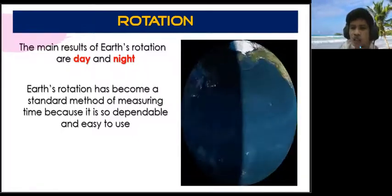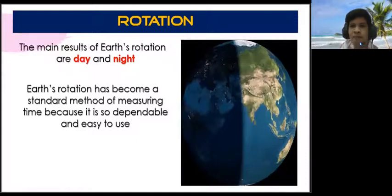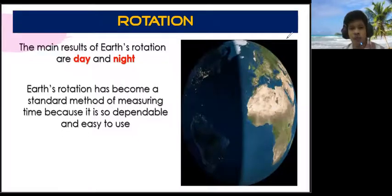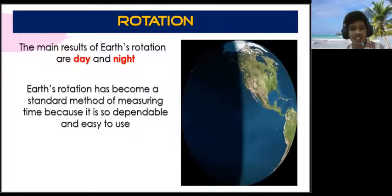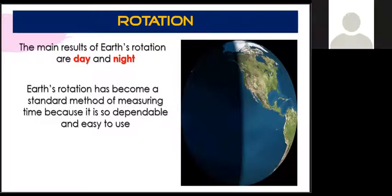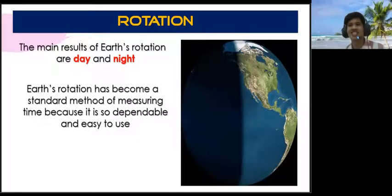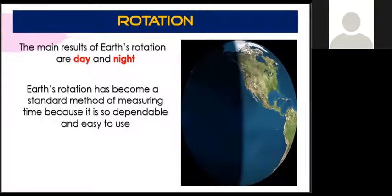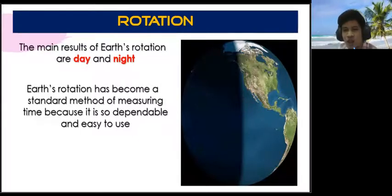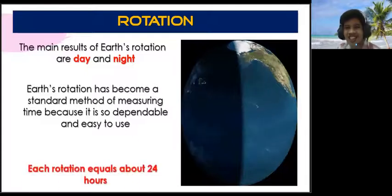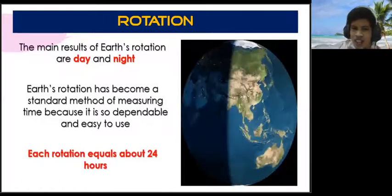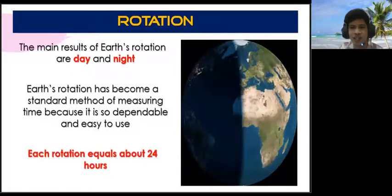How long is a single rotation of the earth? One day — that is correct. And one day is 24 hours. So each rotation, if it is day and night, therefore it's 24 hours. We can measure the earth's rotation in two ways, therefore we have two kinds of days.